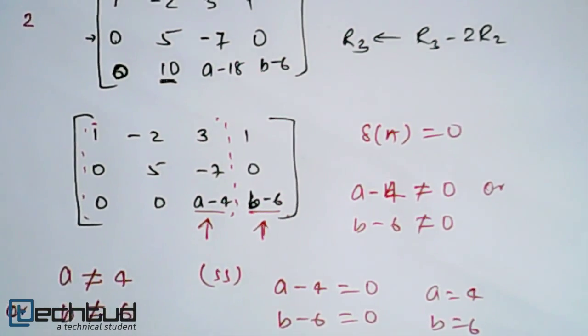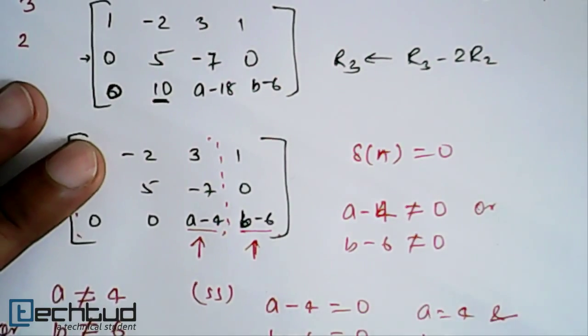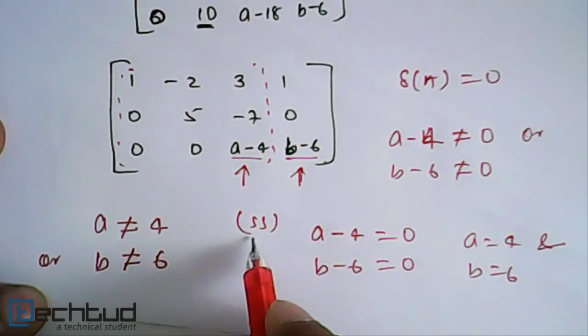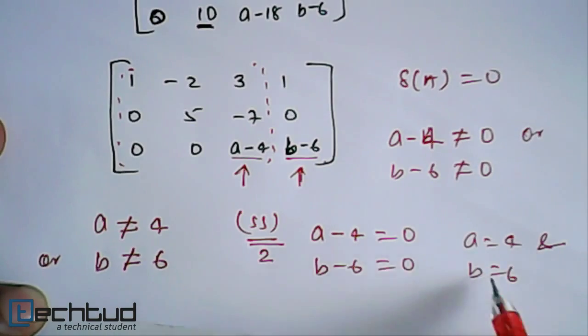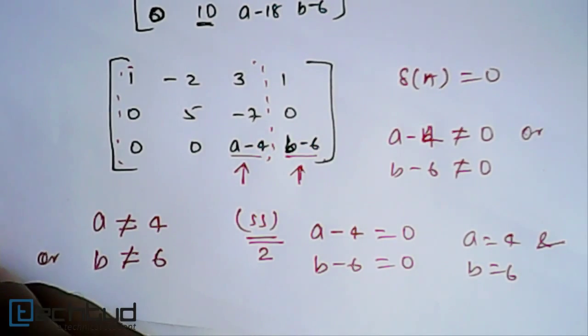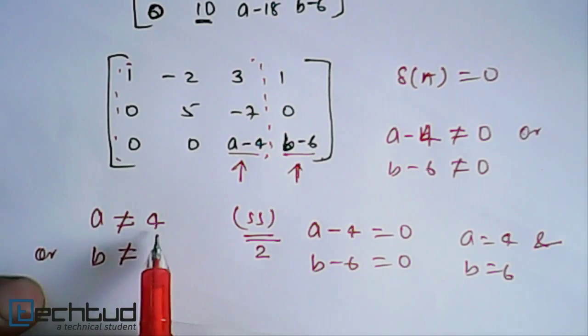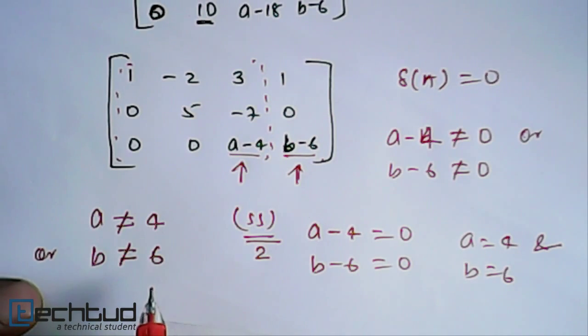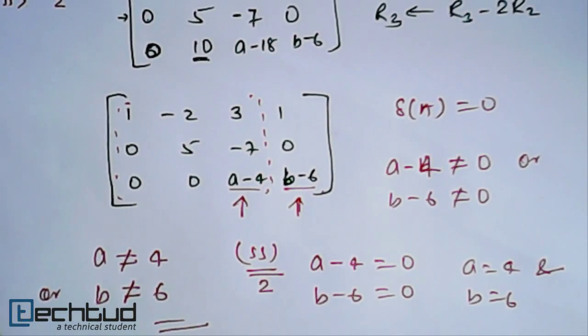Here it should be 'and'. Here it should be 'or'. For rank to be 2, it depends on both a and b: a should be equal to 4 and b should be equal to 6. But for rank to be equal to 3, either a should not be equal to 4 or b should not be equal to 6. Both should not be there. For rank to be 3, not both. Both cannot be zero. It depends on one of a and b.